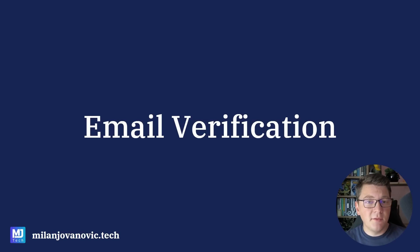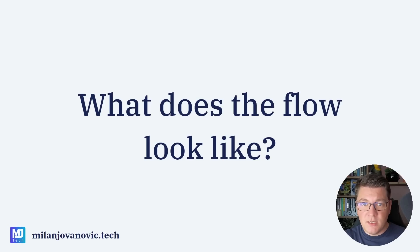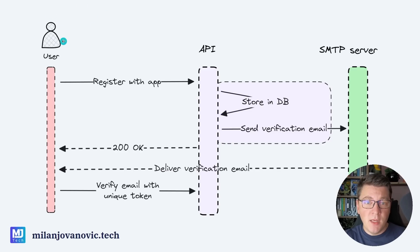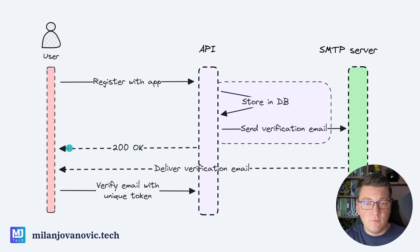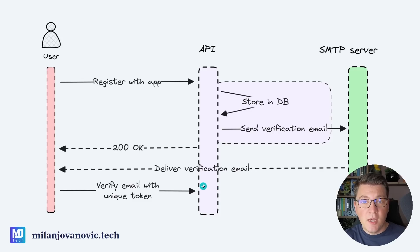The first thing we're going to need is a high-level plan for email verification. We have our user trying to register with our system, which is represented with an API, and then we have an SMTP server which we are going to use to send emails. There are two distinct flows here. The first one is registering with our API, where we store the user in the database and then instruct the SMTP server to send a verification email to the user. We immediately return a response back and ask them to verify their email address. In the meantime, the SMTP server delivers the verification email, which triggers an action on our API where we verify the email with a unique token.